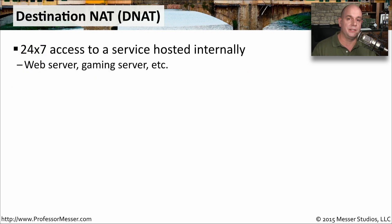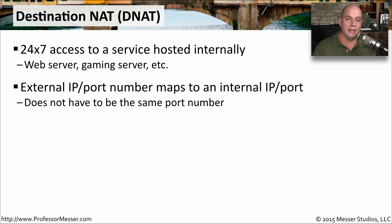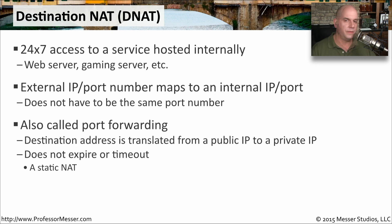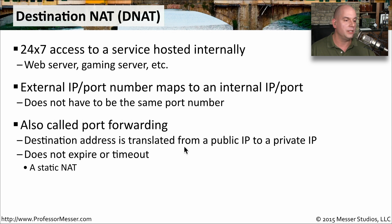The reverse of source NAT is destination address translation. We commonly see this when we have a service running — maybe a web server or gaming server that's always on inside our organization, but we have private IP addresses that can't be accessed from the outside. That's exactly where a destination NAT comes in: we change where the traffic is going once it hits our router, translating the destination IP from the public IP to the private IP. Sometimes this is referred to as port forwarding, and it's a static configuration — the router will always send incoming traffic to that specific internal device.